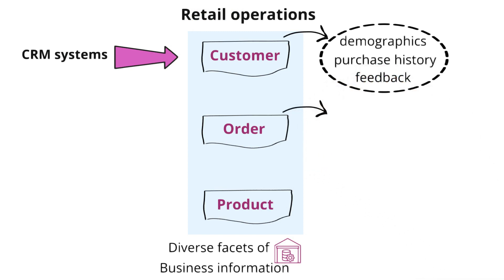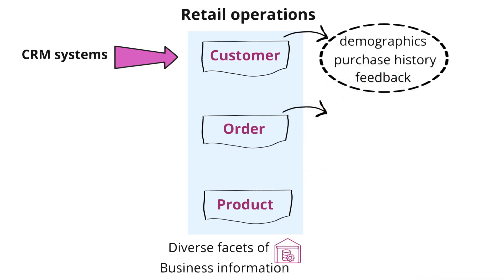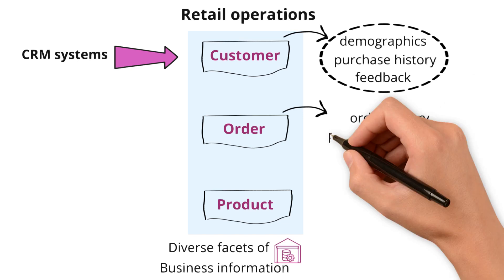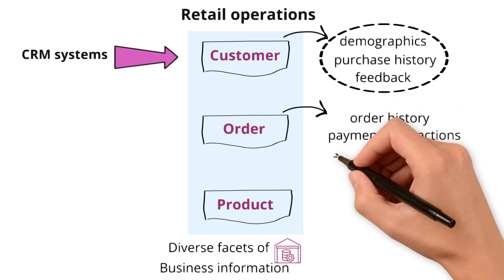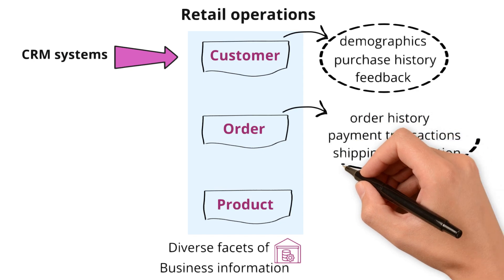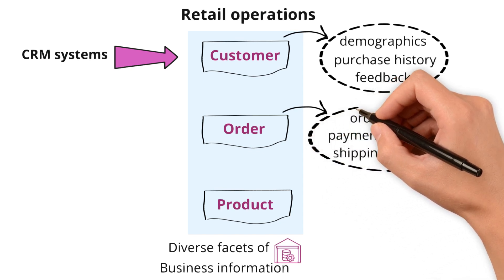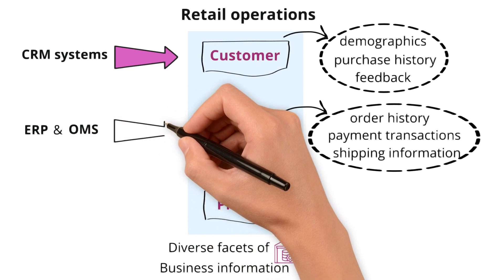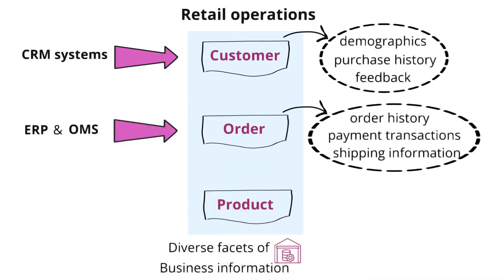Next, we have order data encapsulating details like order history, payment transactions, and shipping information — the nuts and bolts of the sales cycle. Systems like ERP and order management systems are typically leveraged here.